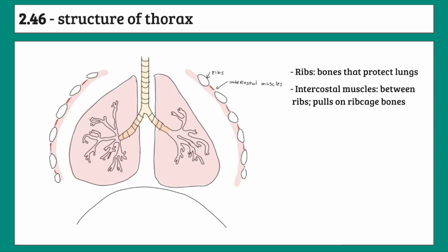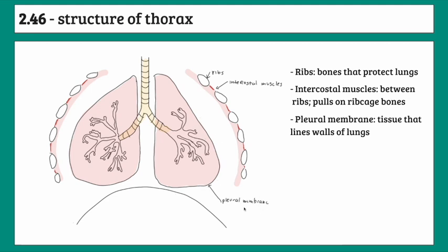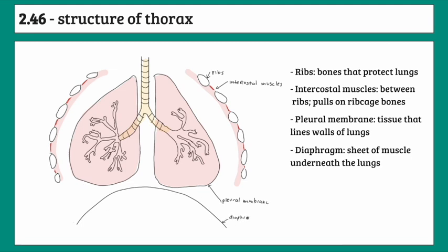We'll look at the roles of intercostal muscles a bit later. We've also got the pleural membrane — a thin layer of tissue that lines the walls of the lungs and the inner walls of the chest cavity. And we've got the diaphragm, which is a large sheet of tissue and muscle that lies underneath the lungs.